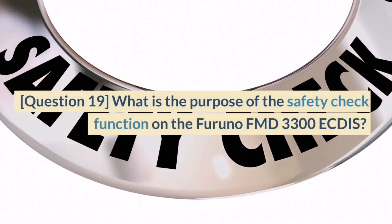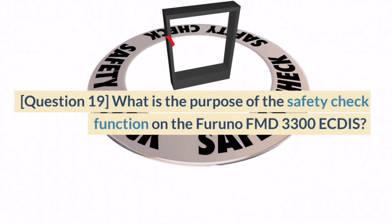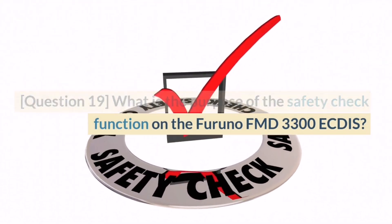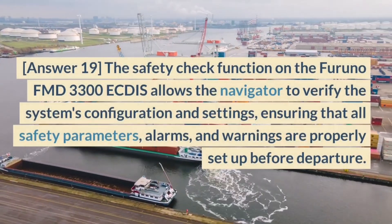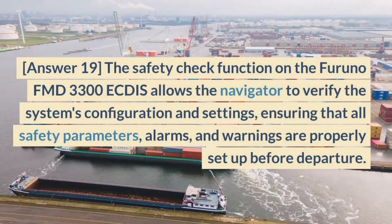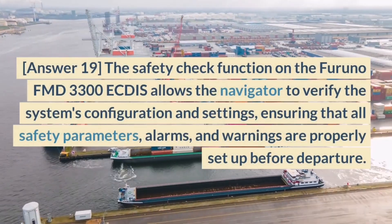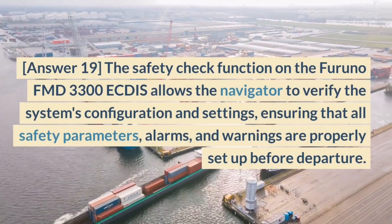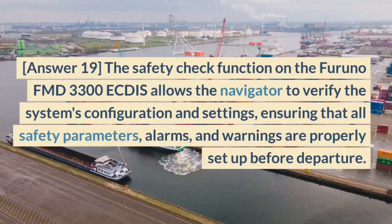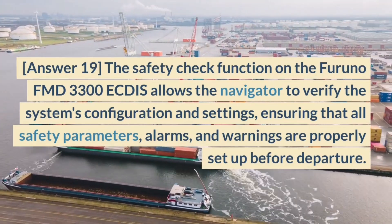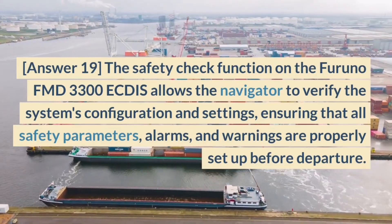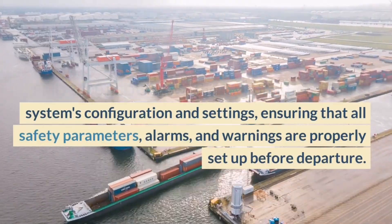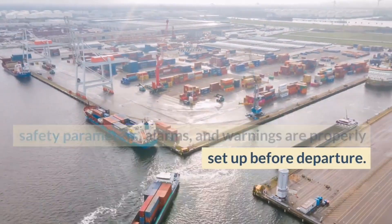Question 19. What is the purpose of the safety check function on the Furuno FMD 3300 ECDIS? Answer 19. The safety check function allows the navigator to verify the system's configuration and settings, ensuring that all safety parameters, alarms, and warnings are properly set up before departure.